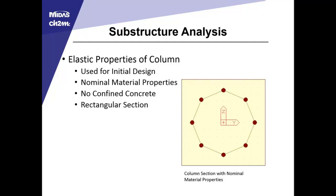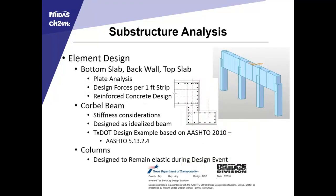For the common properties, in the initial model in MIDAS Civil 3D we used the elastic properties based on nominal material properties — 60 KSI steel, 4.5 KSI concrete. No concrete was assumed to be confined, and we relied on the entire rectangular section. The slab elements were designed as plates and designed with a one-foot strip width using a reinforced concrete design. There were some stress concentrations around the columns that were taken into account, but for the most part the reinforcement through the slab was consistent.